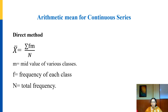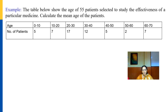Now let us see how to find the arithmetic mean for continuous observations using the direct method. In the direct method, x̄ = Σ(f·m) / n, where m is the mid-value of each class, f is the frequency of each class, and n is the total frequency.